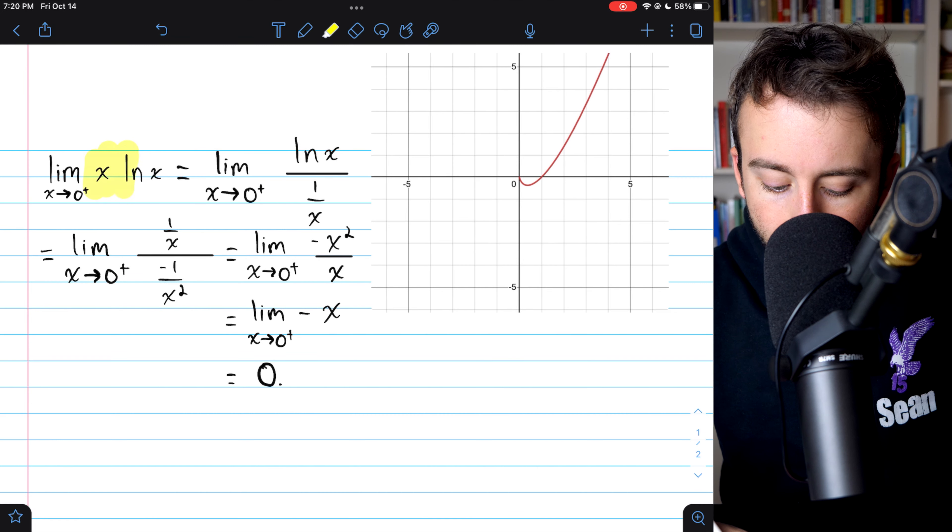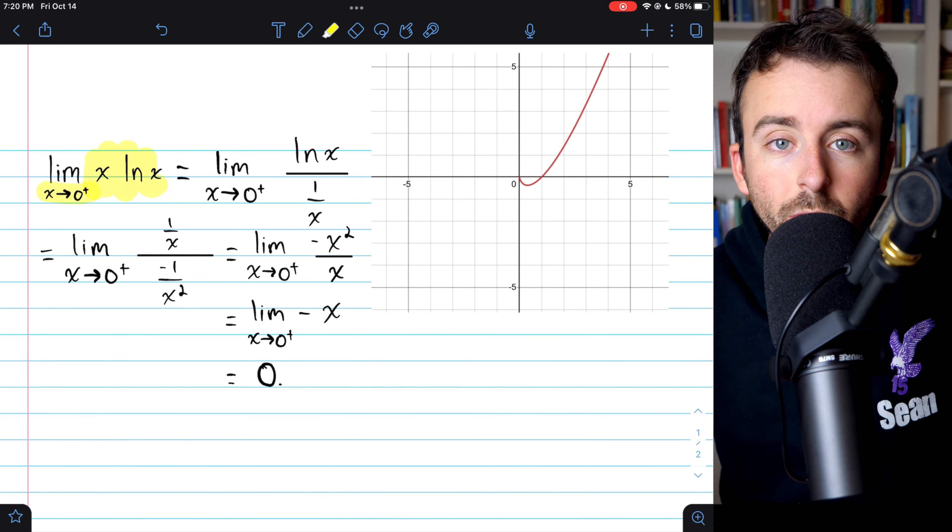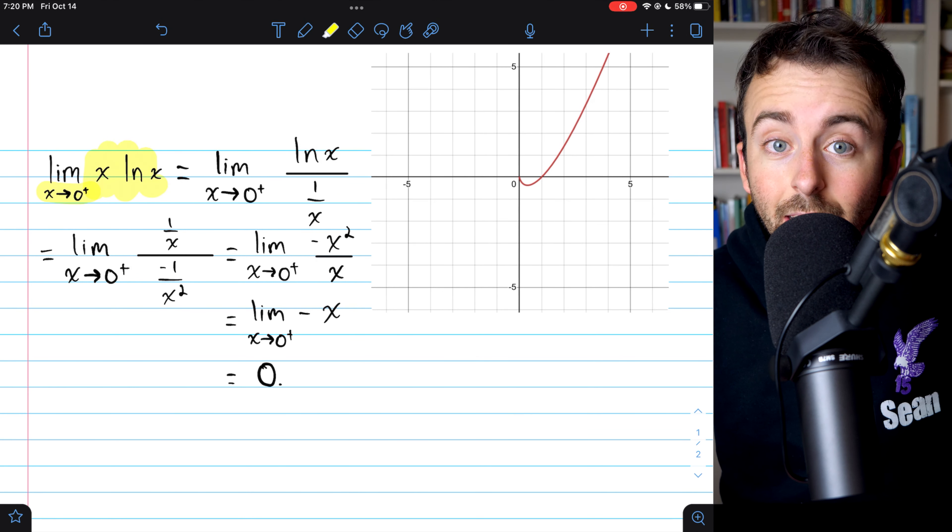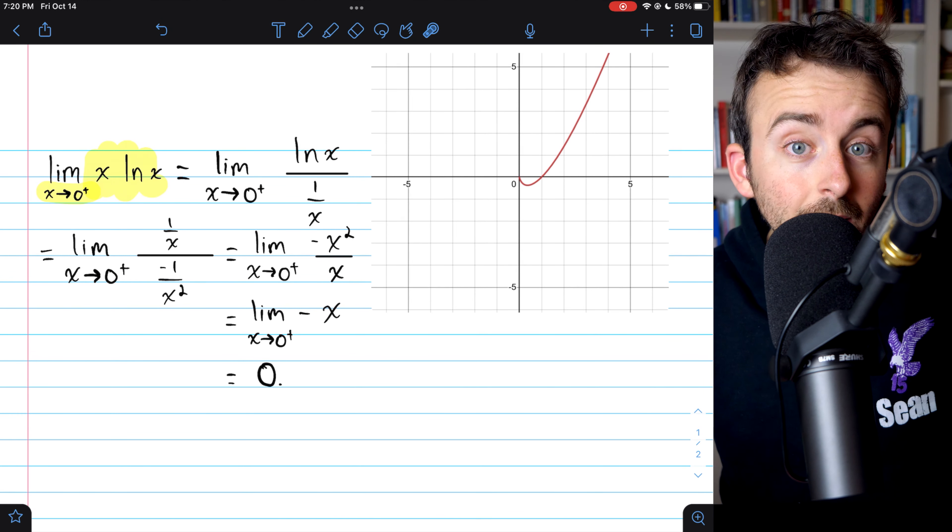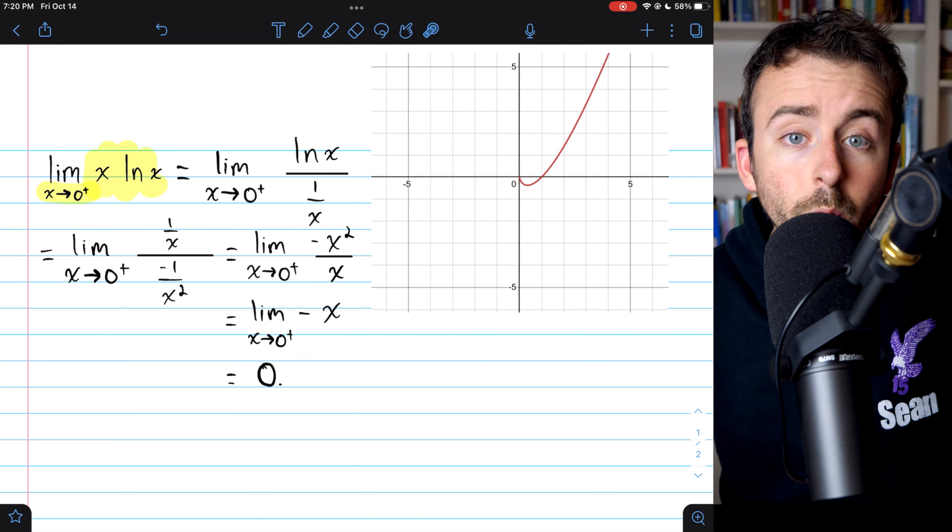And that's how we evaluate the limit of x ln(x) as x approaches zero from the right using L'Hopital's rule. Answer turns out to be zero. And I hope this was a helpful explanation. Let me know in the comments if you have any questions or video requests.